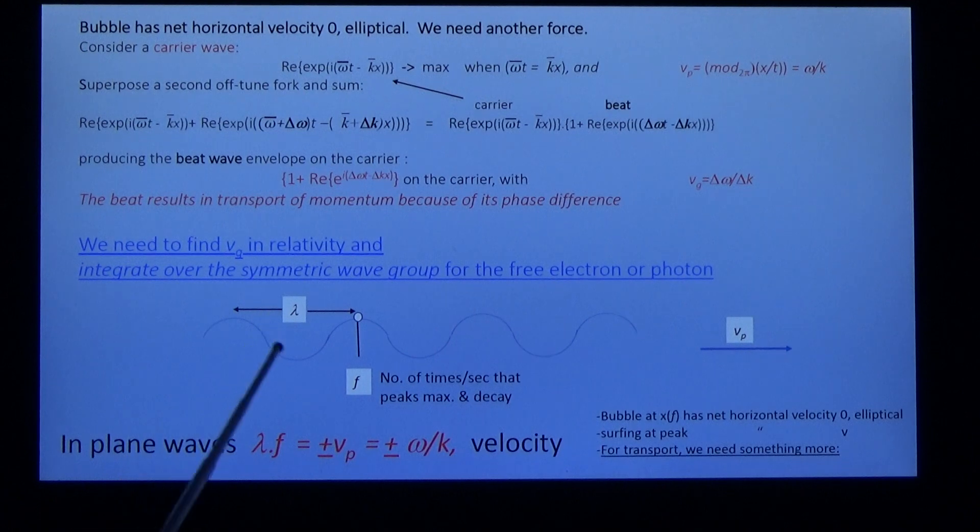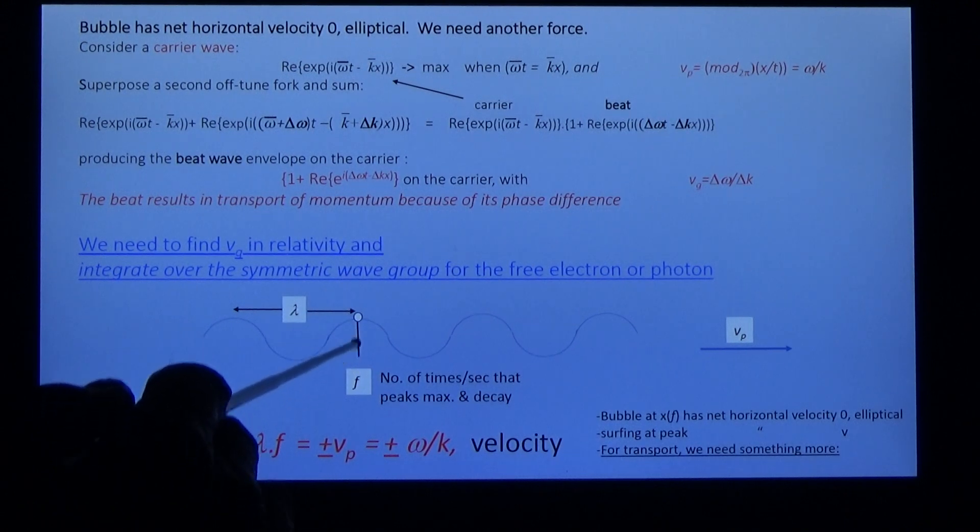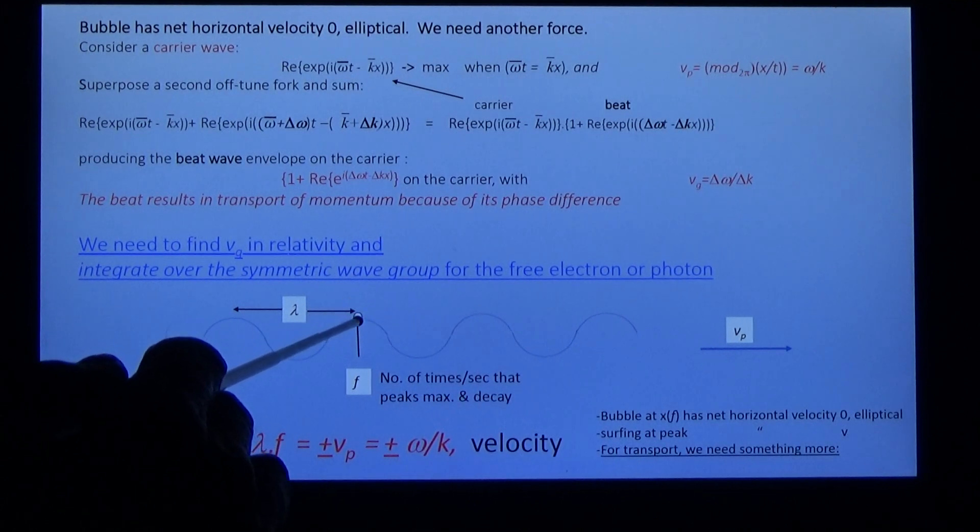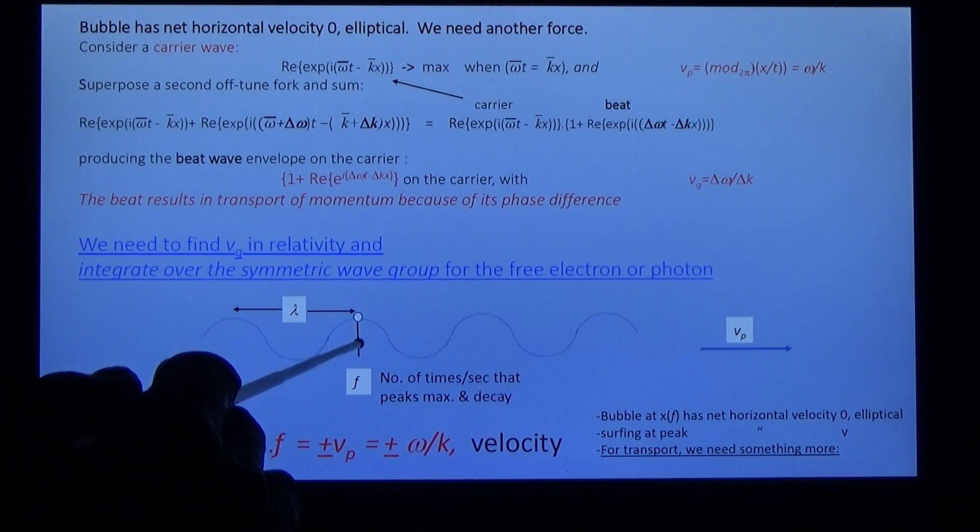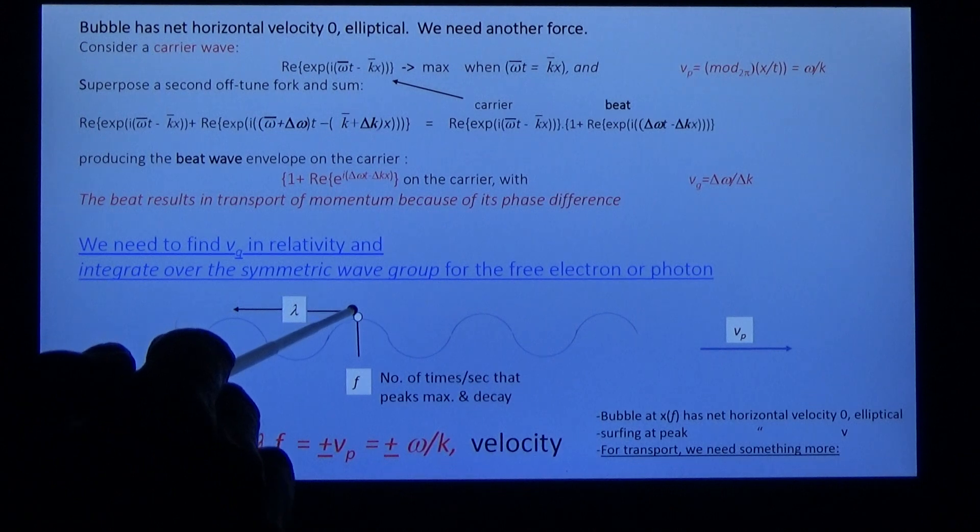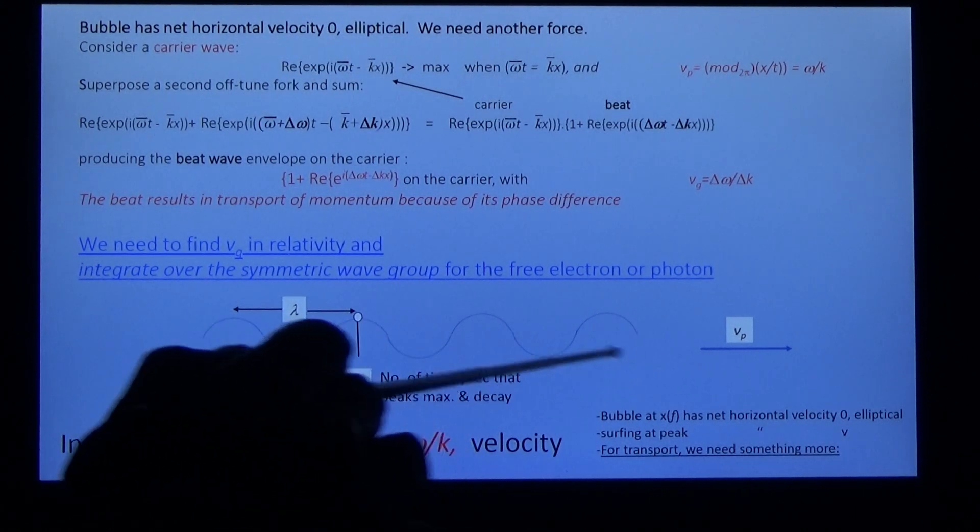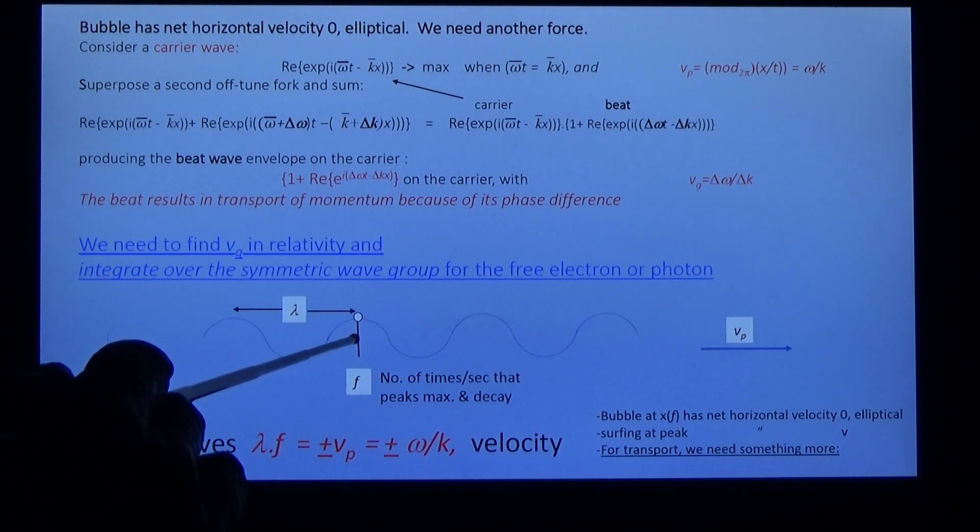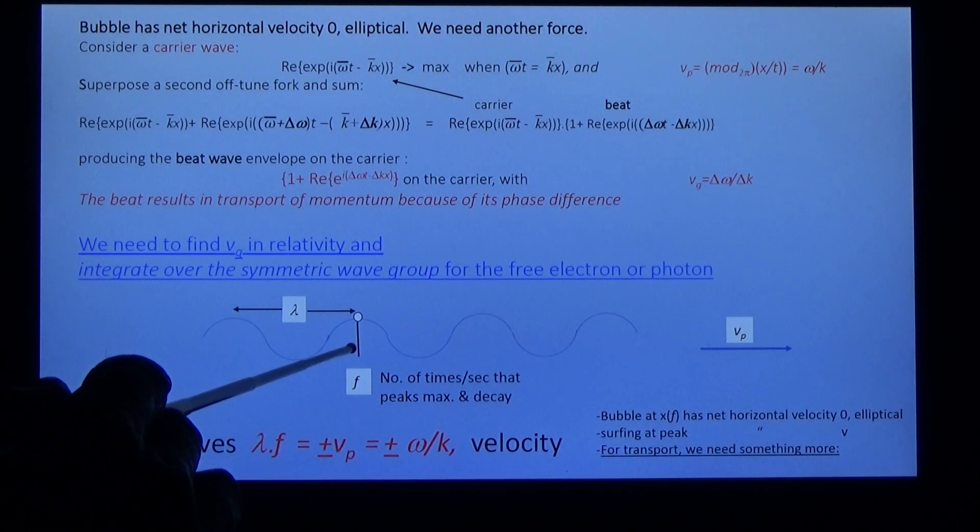Think of a bubble on a wave here. As the wave passes through from left to right, the bubble moves up and down on the top of the wave. Actually, it executes an elliptical trajectory, but the net motion in a horizontal direction is 0, so there's no momentum. So how do we make this wave produce momentum?